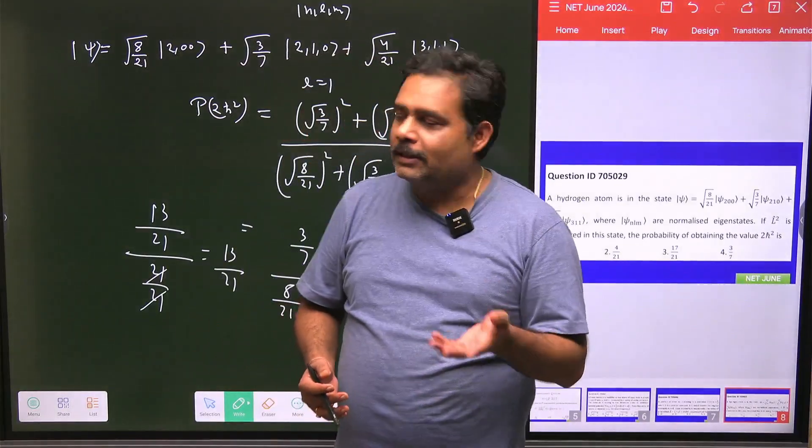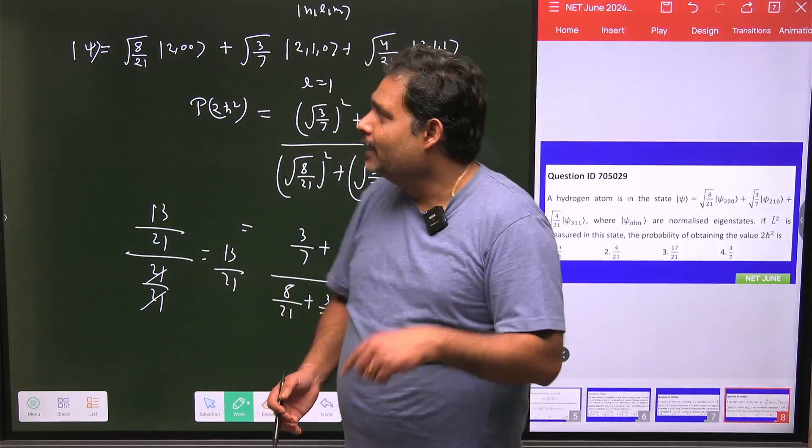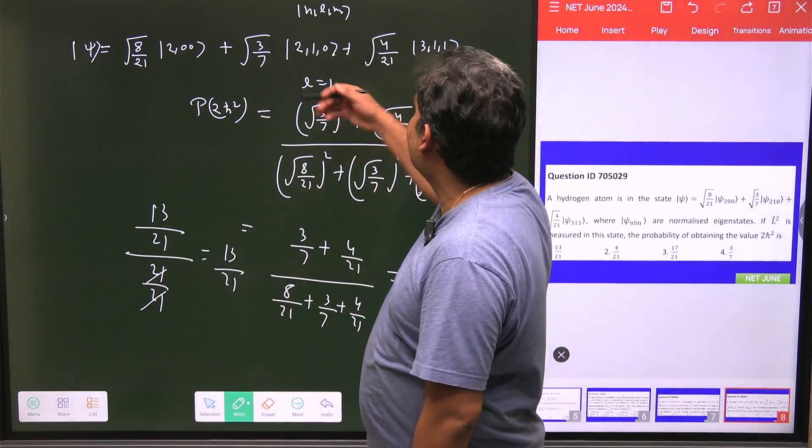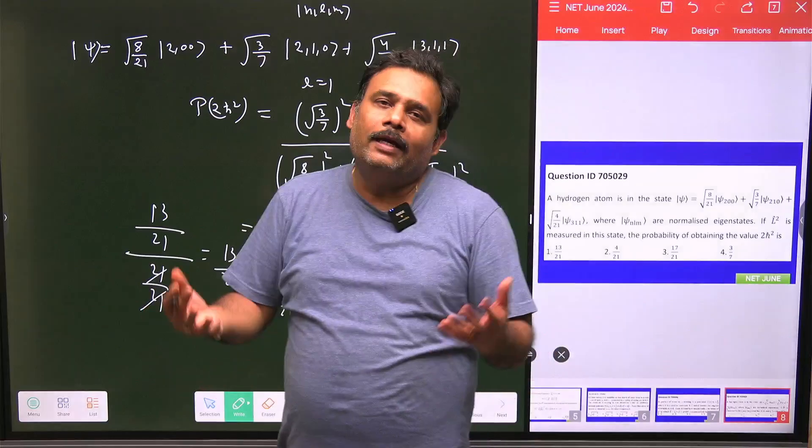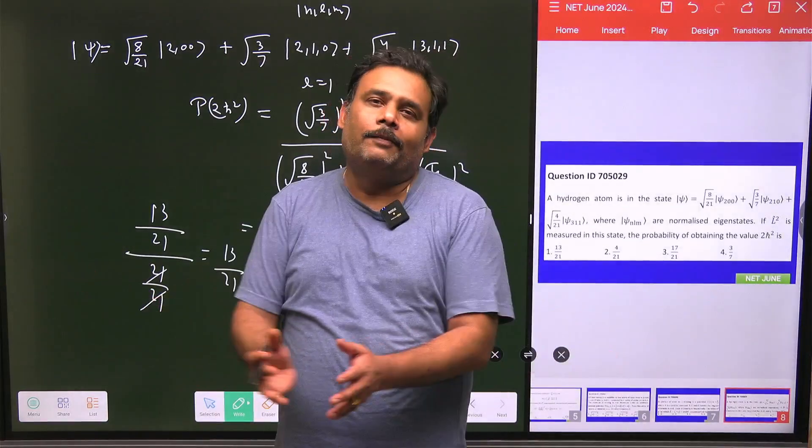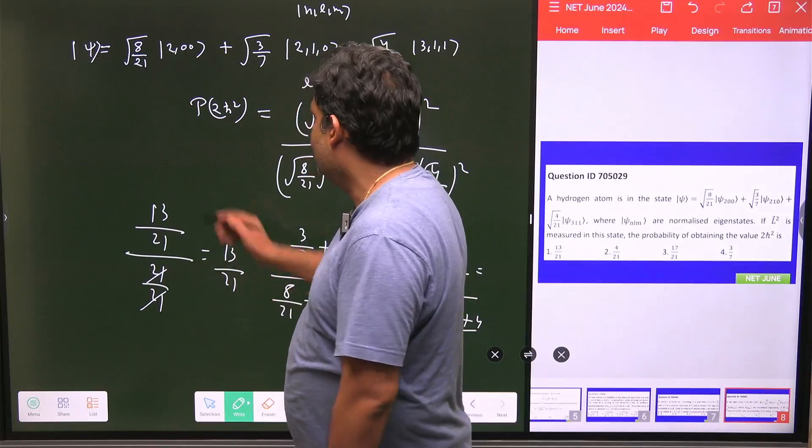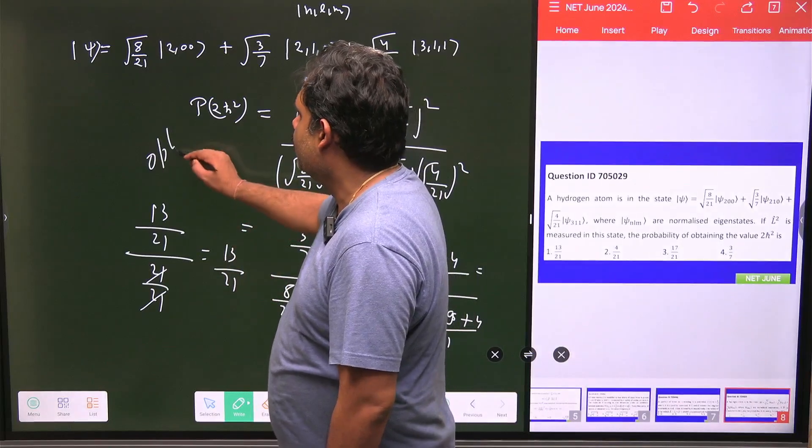You can ask this question something like: from which state are you getting 2ℏ²? So what will be the answer? The answer will be either from this state or from this state. And when you are going for OR concept in a probability, you have to directly add this one, and your answer will be 13/21. So option 1 is the correct.